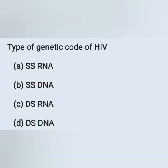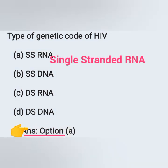Type of genetic code of HIV: Option A — ssRNA. Option B — ssDNA. Option C — dsRNA. Option D — dsDNA. The genetic code of human immunodeficiency virus is ssRNA — option A is the correct answer. The genetic code of HIV consists of two single-stranded RNA.